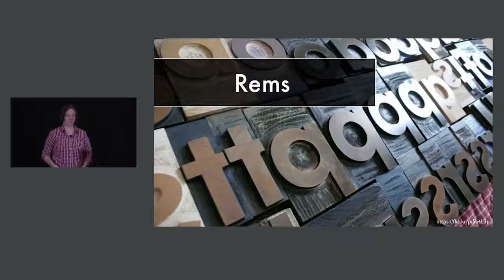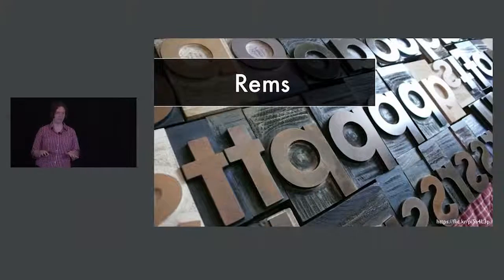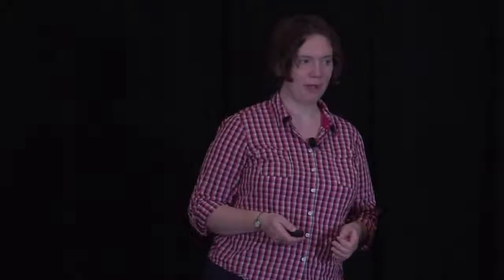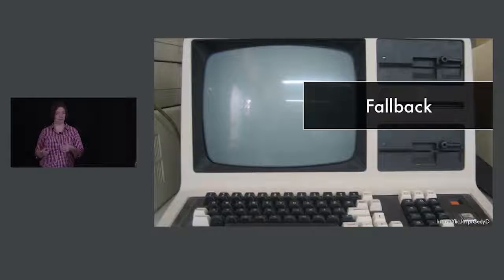REMs are the other relative unit you can use to size your text. They work similarly to ems except for one thing: the size of the font always goes back to the base default — it's not relative to the containing element. REMs aren't tricky like ems. They're very simple and straightforward, except for the problem that they don't work on every device. So you have to have a fallback, which means it might seem easier to use, but you're going to have to do more work to make sure it works for every device.